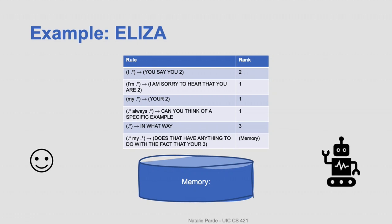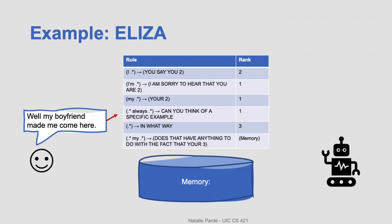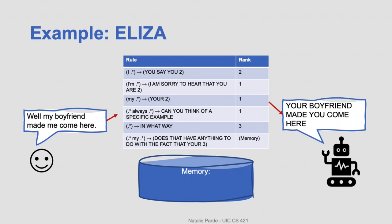The user thinks of a specific example and tells the system that their boyfriend made them come to the session. We check our rules and find that this input matches two different patterns — one suggesting an output and one suggesting storing information in memory for later use. We do both: first we apply the transformation to generate the current output, then we store the suggested transformation on the memory stack in case a future input doesn't match any patterns.